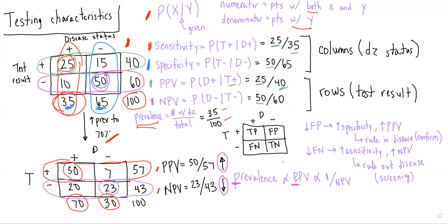The last concept is thinking about how sensitivity and specificity relate to PPV and NPV. If we redraw the two-by-two table with labels: the upper left is true positives — patients who have the disease and had a positive test result; upper right is false positives — positive test but no disease; bottom left is false negatives — negative test but have the disease; and bottom right is true negatives — negative test and no disease.